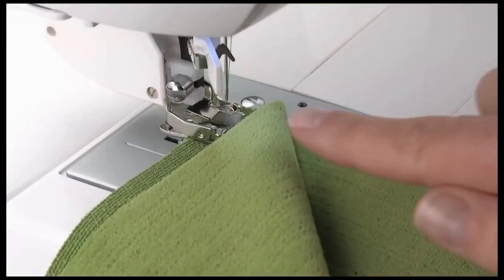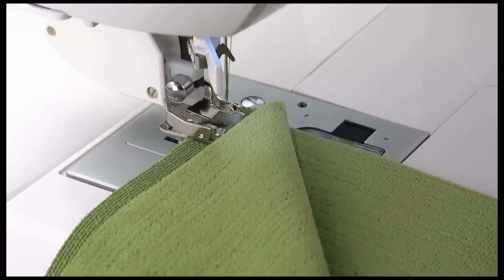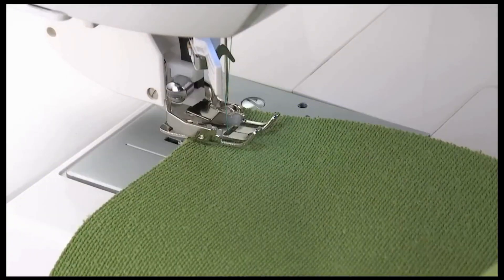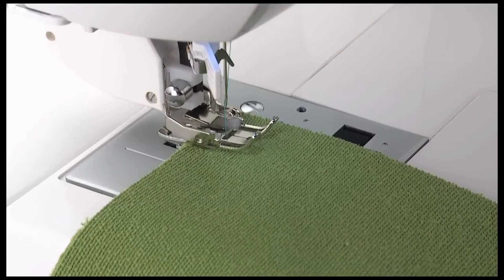To sew seams in napped fabrics, place the fabric's right sides together under the Presser Foot. Lower the Presser Foot, then sew the seam.